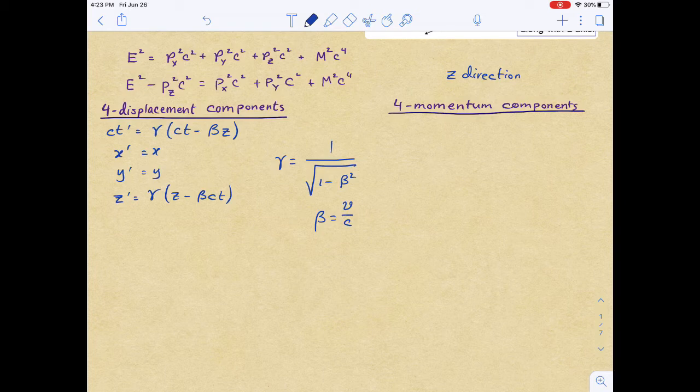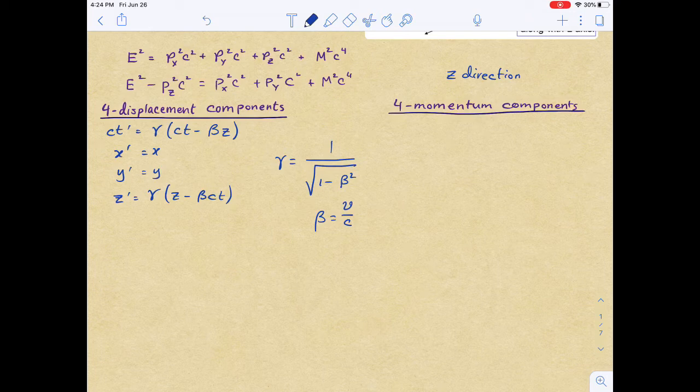Now with this gamma, we have to define as 1 divided by square root of 1 minus beta squared, where beta in this case is v divided by c, and v is the speed that the frame is moving in the z direction.